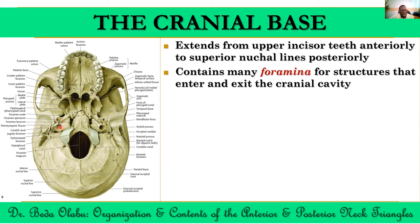Structures we discuss in the neck will pass through foramina including the foramen magnum, the jugular foramen, the carotid canal, foramen spinosum, foramen ovale, and foramen lacerum — which is covered by cartilage in the living. We can divide the skull base into four regions: anterior, middle, lateral, and posterior.